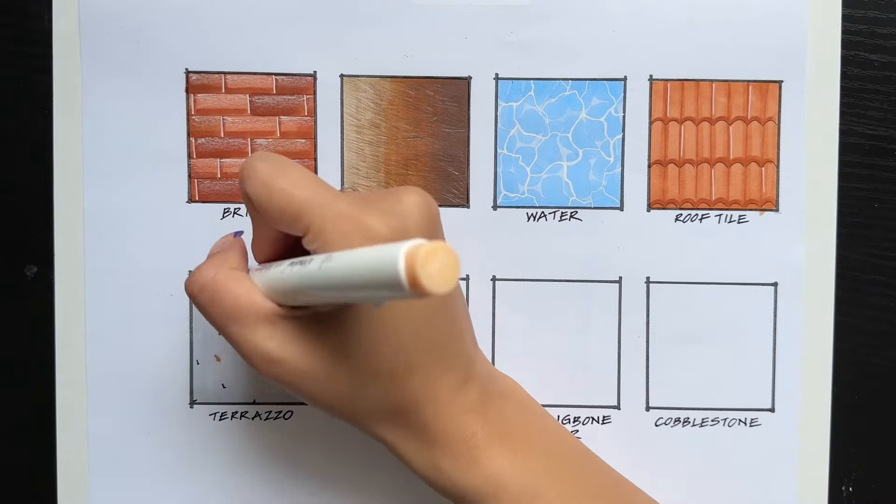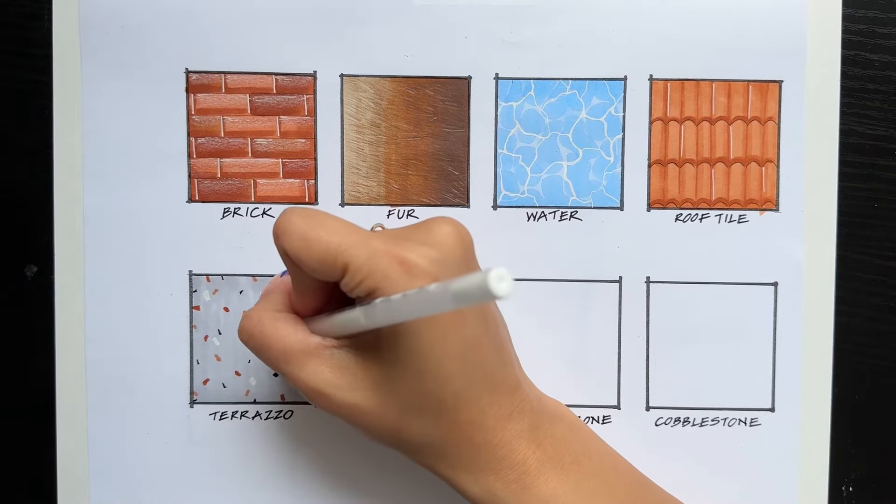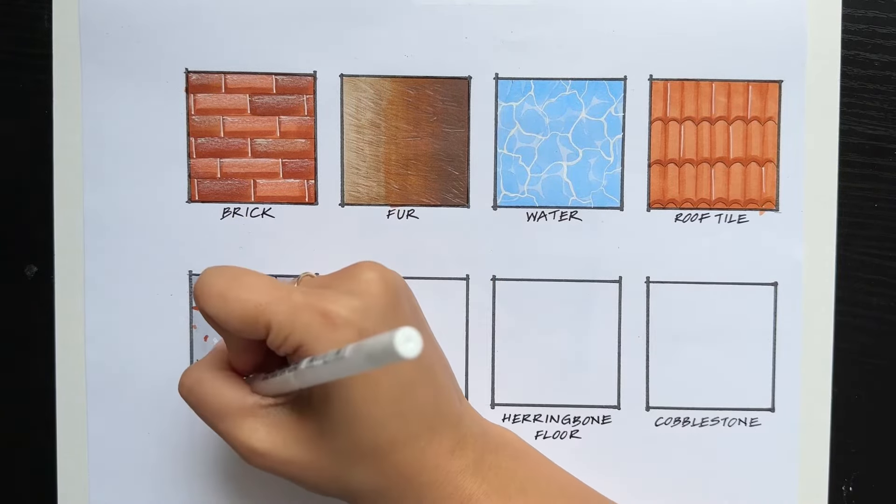Next, taking a black fineliner, I'm just creating the little chips. And then also using a peach color, a darker orange color, and a white gel pen for the rest of them.